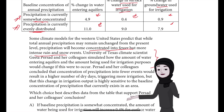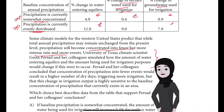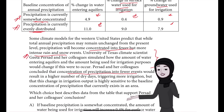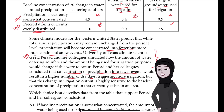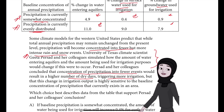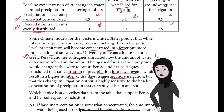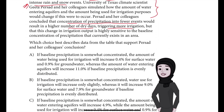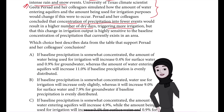Prasad and her colleagues concluded that concentration of precipitation into fewer events would result in a higher number of dry days. If rain and snow happens only on fewer days in the year, there will be more dry days, which will trigger more irrigation. But this change in irrigation output is highly sensitive to the baseline concentration of precipitation that currently exists in an area.